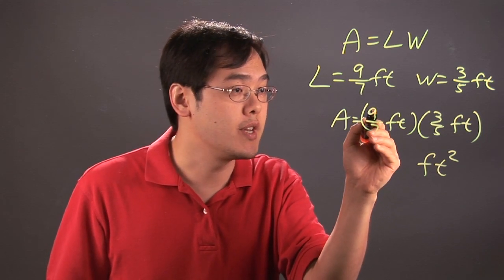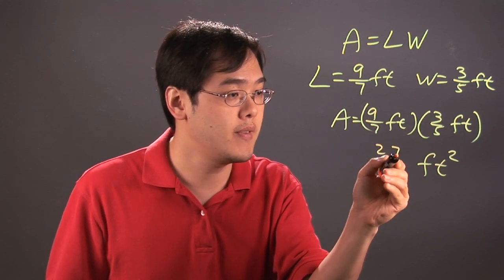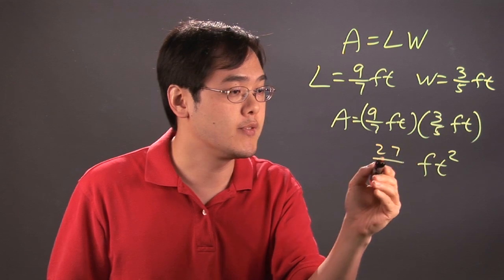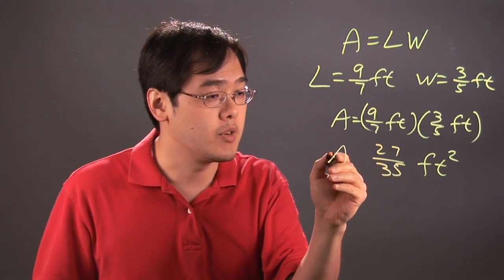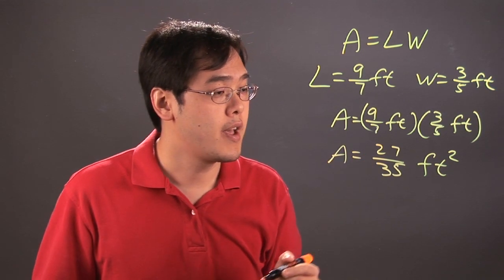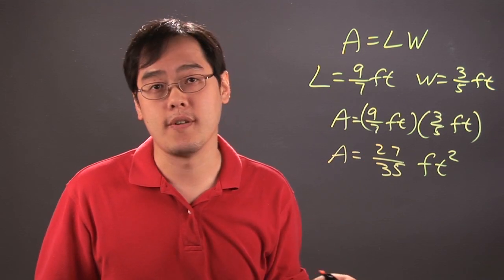You multiply the numerators: nine times three gives you 27, and then seven times five gives you 35, so the area is 27 over 35 square feet.